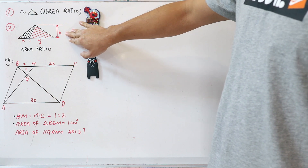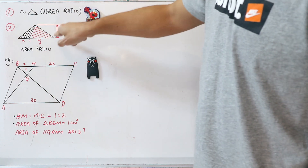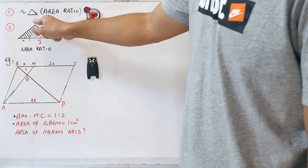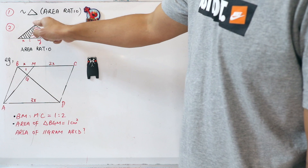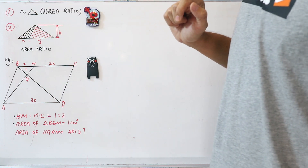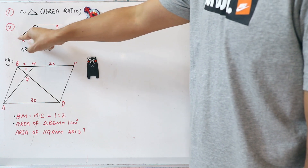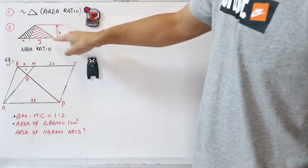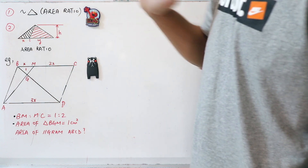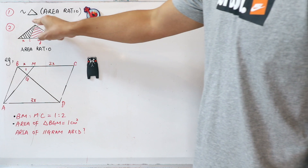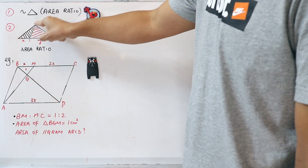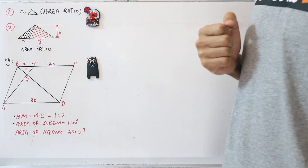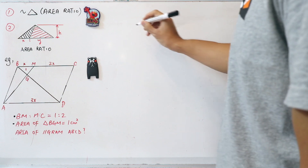The second important thing is: if you look at this big triangle and slice it into two smaller triangles — one shaded black and the other red — and the base of the black triangle is x and the base of the red triangle is y, so the ratio is x to y, then the area of the black triangle to the area of the red triangle is also x to y.